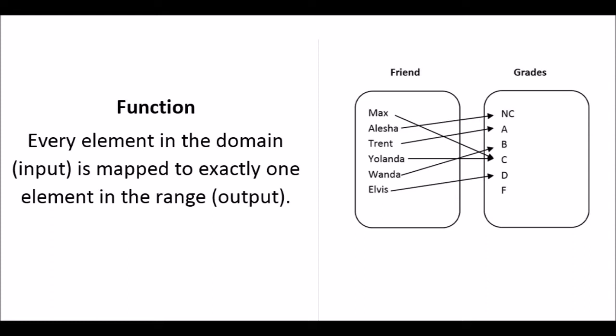Now if I had a friend that had two different grades, then this would not be a function. So let's say if Max had a C and he had a D, then that would not be considered a function. So every element in the domain is mapped to exactly one element in the range.